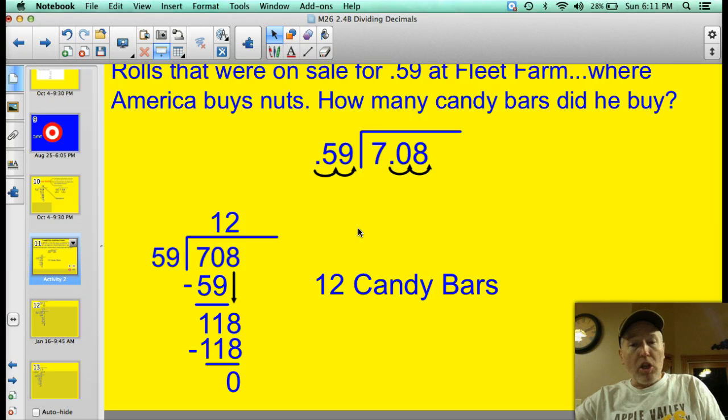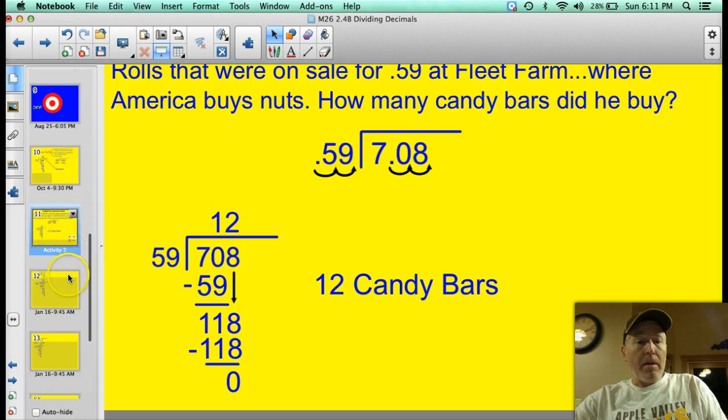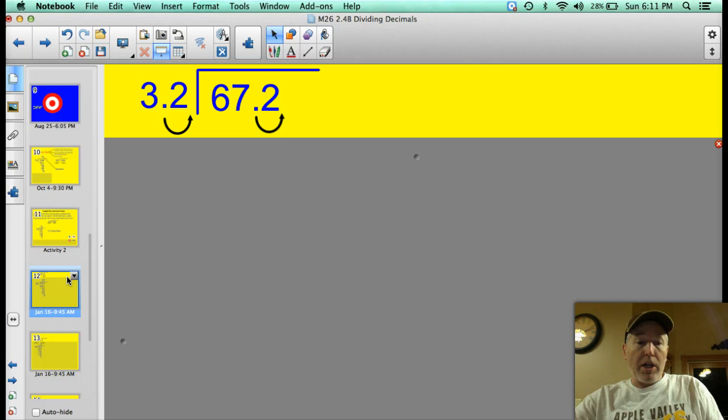Same steps. Look for decimals in the divisor. Move them to the right to create a whole number. And then move the decimal in your dividend the exact number of places. Alright. Time. Two more. Then I'm going to cut you loose.